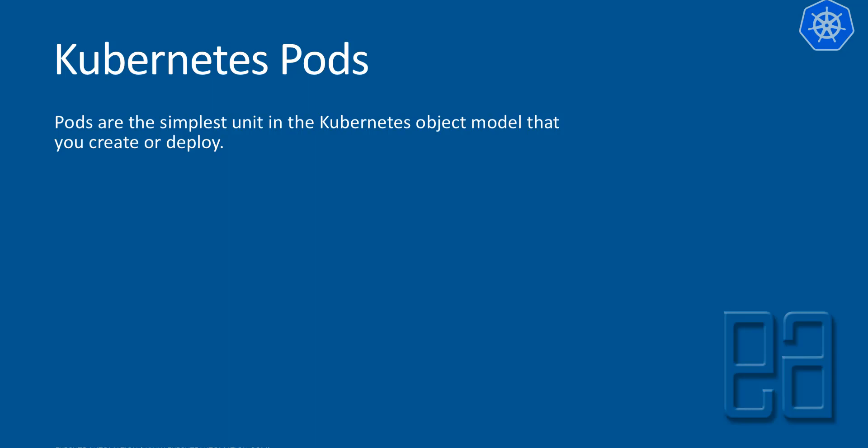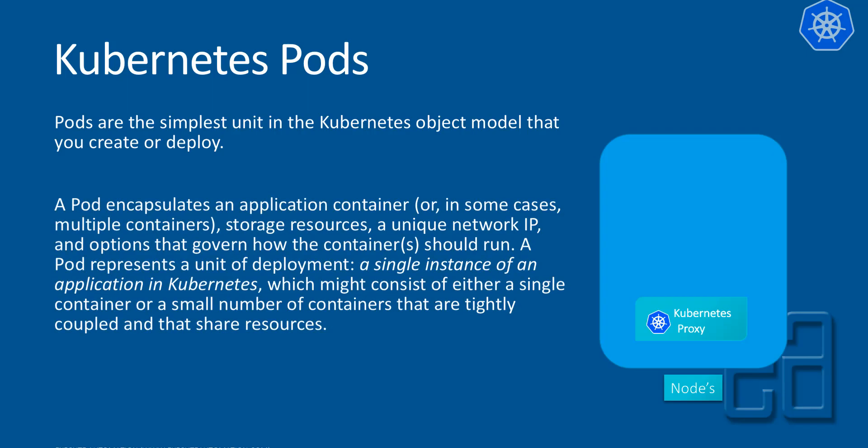Pods are the simplest unit in the Kubernetes object model that you create or deploy. A pod encapsulates an application container, storage resources, a unique IP address, and options that govern how the containers should run. A pod represents a unit of deployment — a single instance of an application in Kubernetes — which might consist of either a single container or a small number of containers that are tightly coupled and share resources.